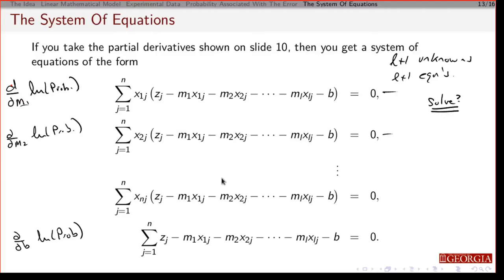All right, and notice the thing here is notice that this is actually a linear system of equations. It's linear because I know that number, I know that number, I know all of these numbers. The only thing I don't know are the m's and none of the m's are being multiplied by one another or the b's. And so this is going to be linear if I multiply that through and expand everything out.